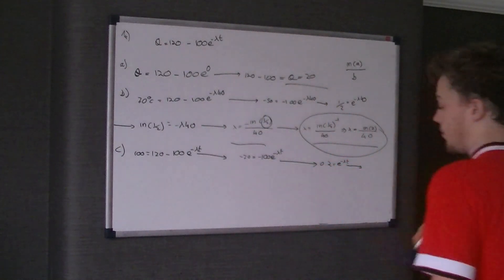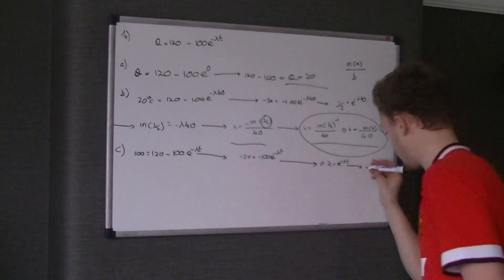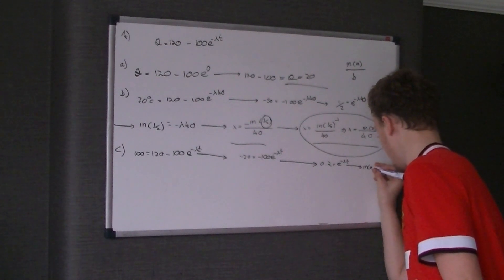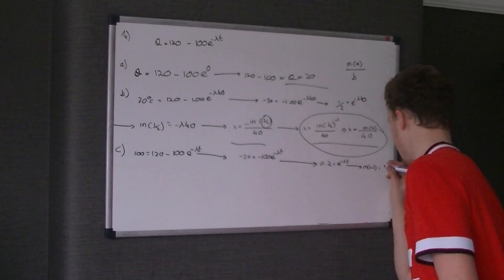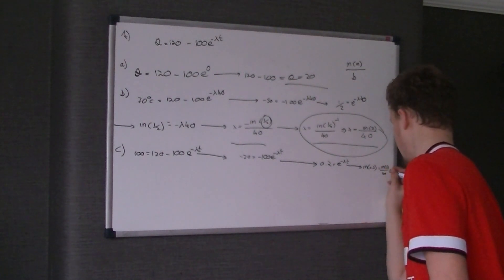You could put it in there if you want to. Ln both sides, you've got the ln of 0.2 or a fifth is equal to the negative ln of 2 over 40 times t.